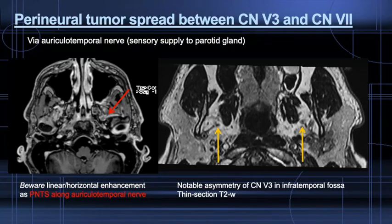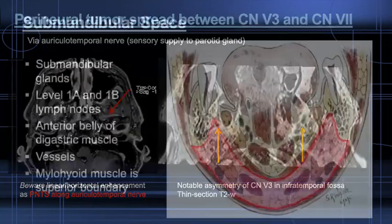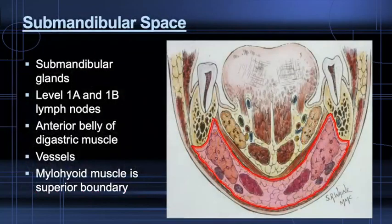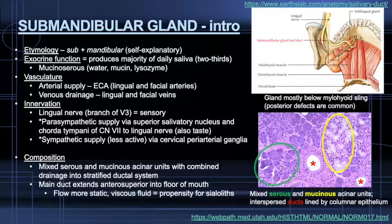This exemplifies perineural tumor spread between the facial and trigeminal nerves via the auriculotemporal nerve. Now moving on to the submandibular space and glands. The submandibular gland lies within the submandibular space and produces a more mucinous saliva compared to the parotid glands.